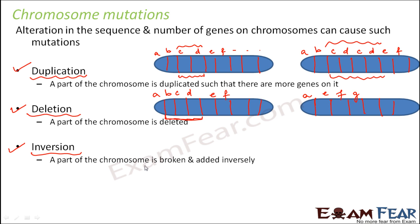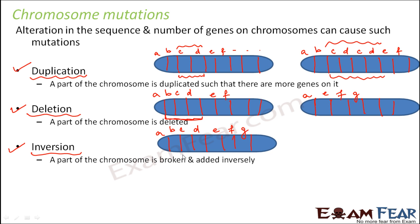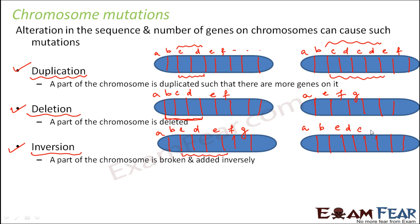Inversion means a part of the chromosome is broken and then added back inversely. For example, consider a chromosome with sections A, B, C, D, E and so on. We take out a portion — say C, D, E — and put it back inversely as E, D, C. The remaining sections stay the same. Because the sequence of the genes has changed, even though all genes are present, when it undergoes meiosis the way it combines with the homologous chromosome is altered. The sequence of bases is very important, so when that gets altered, protein synthesis gets altered as well.